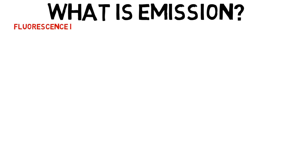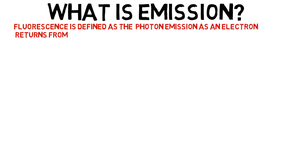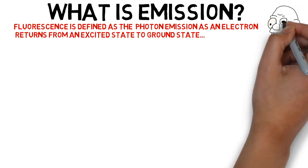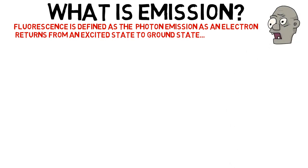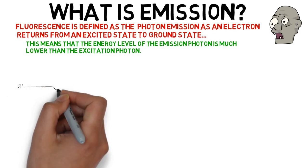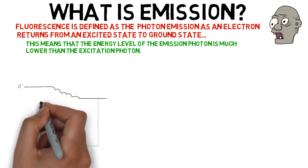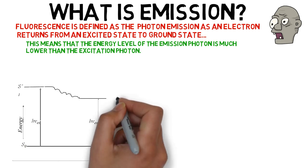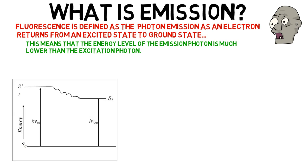Let's state it again. Fluorescence is defined as the photon emission as an electron returns from an excited state to ground state. The key thing to understand is that the emission wavelength in flow cytometry is always longer than the excitation. Of course, this means that the energy level of the emission photon is much lower than the excitation photon. There are several ways to describe this phenomena, but we often explain this by using a spectral display called the Jablonski diagram.